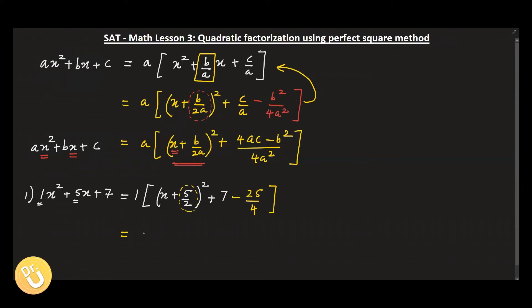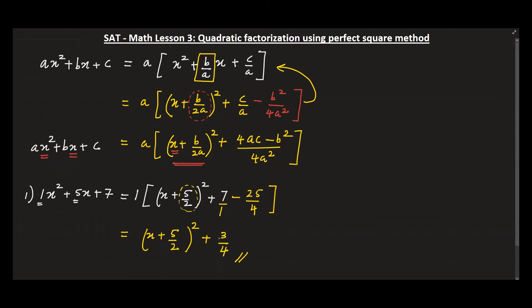So now it's just a matter of simplifying the inner pieces. Here you have denominator 1, so getting denominator 4, this is going to be 28 − 25 = 3, so 3/4. So this is going to be the answer when you apply the perfect square method.